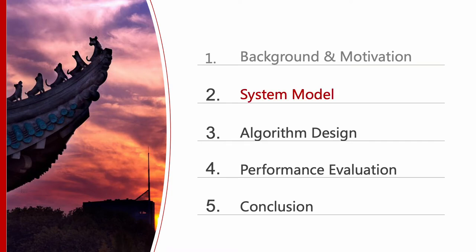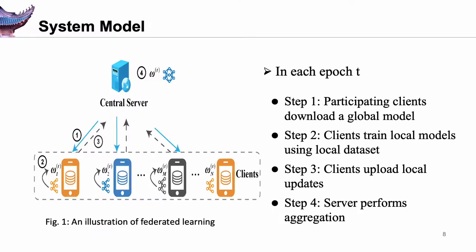Next is our system model. We consider a federated learning system with a cloud server and online clients. For training, multiple communication rounds are needed to converge. The workflow of one communication round includes four steps: first, each participating client downloads the global model; then, each client conducts local training using its dataset; next, clients upload local updates to the central server; finally, the server aggregates updates to learn a global model.